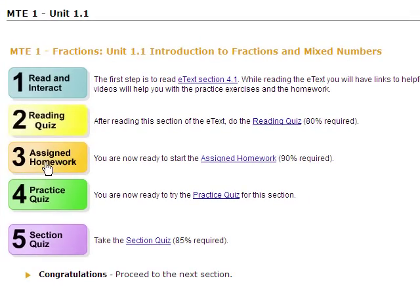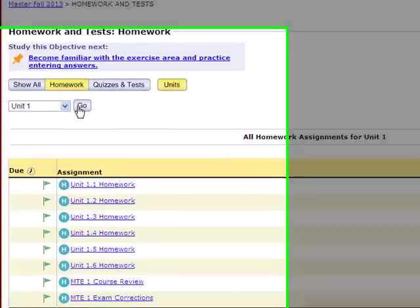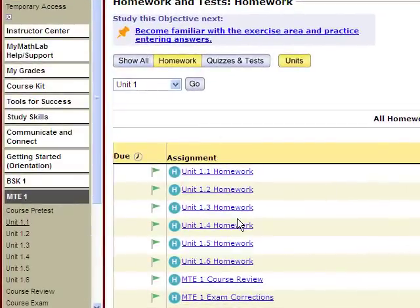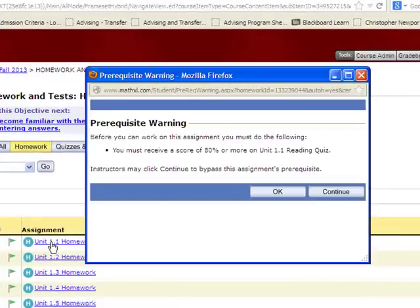Today we're going to take a look at button 3 which is assigned homework. When you click on the buttons it does not automatically pull up the specific homework assignment but it pulls up the homework list and so you just have one more click. If we were in unit 1.1 I would click on unit 1.1 homework again.